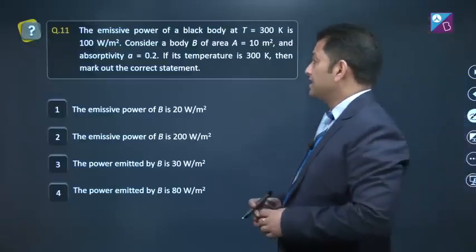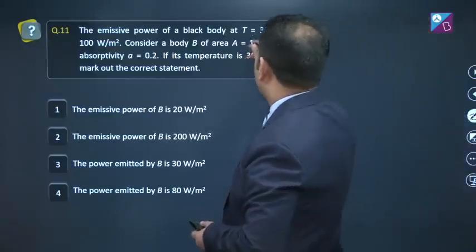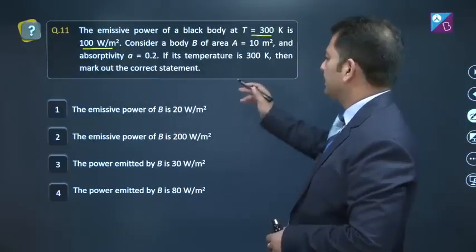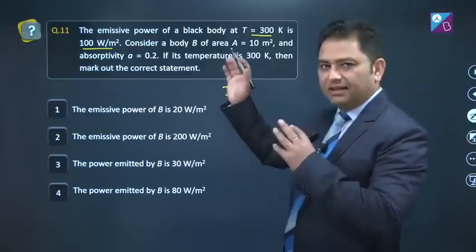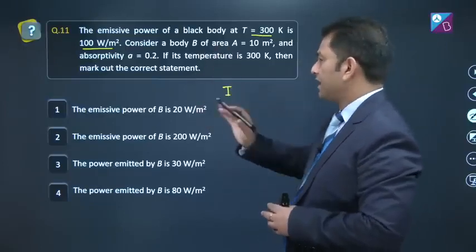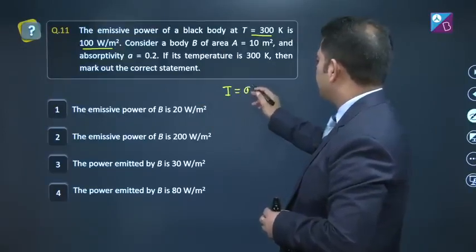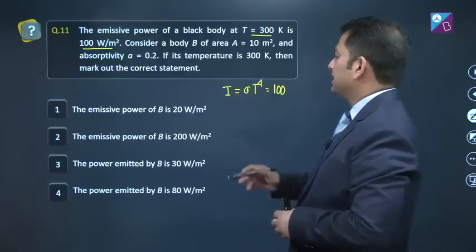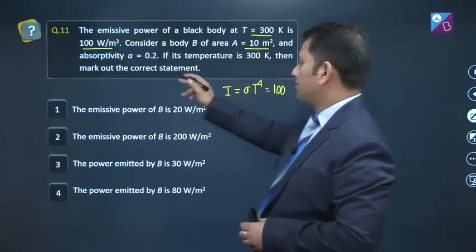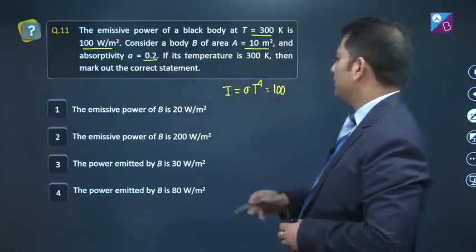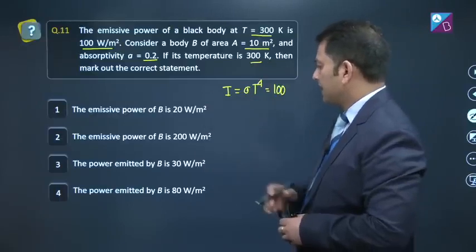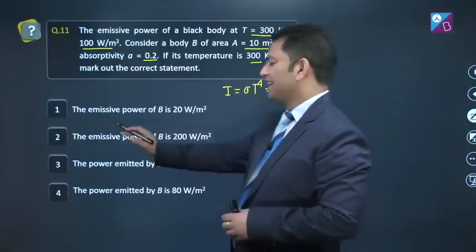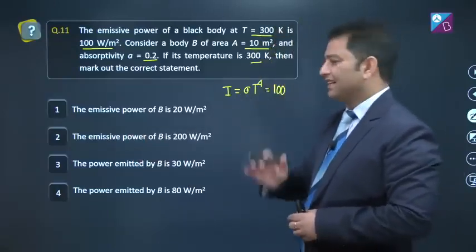Question number 11. Emissive power of a black body at this temperature is 100 Watt per meter square. Do you know that the intensity of radiation in a black body, in case of emissive power, is also said that it is sigma T raised to the power 4. We need to comment about the emissive power and the power emitted.